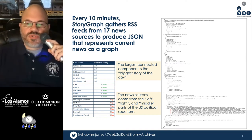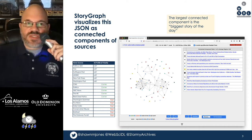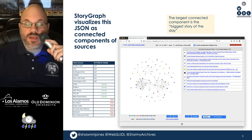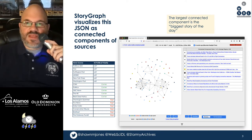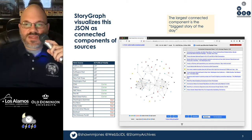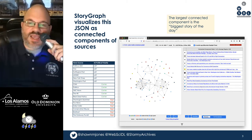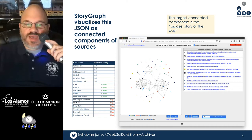Alexander Nawala also produced a tool that visualizes this JSON as connected components of sources, so we can see the actual graph. Each source is represented by a node, pictured as its icon, and the edges indicate that these two particular sources are covering the same story. The largest connected component is the biggest story of the day. Alexander Nawala recently added the ability to see the titles of the news story that you have selected on the graph.